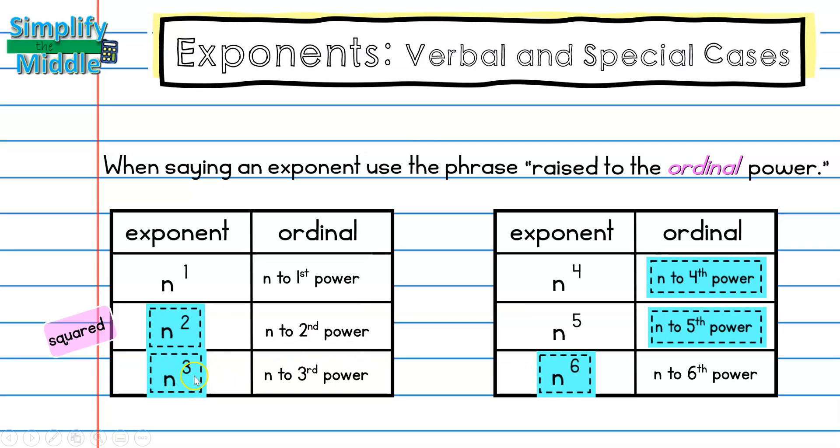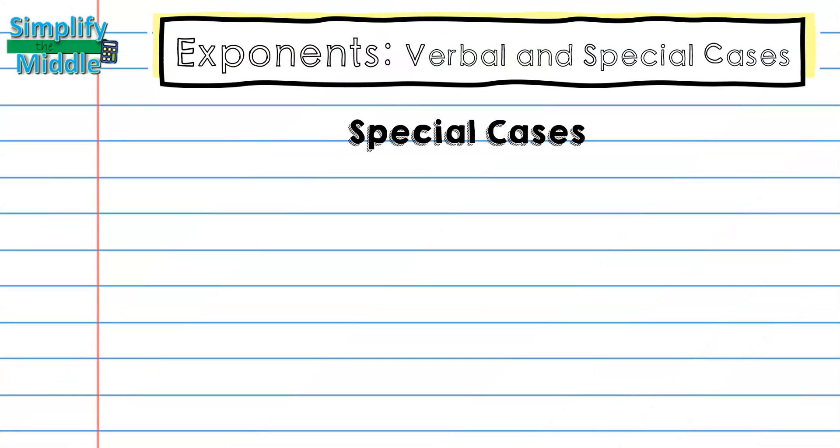This exponent to the third power can be called n cubed. This should also sound familiar from a previous lesson on volume. Now let's investigate some special cases.